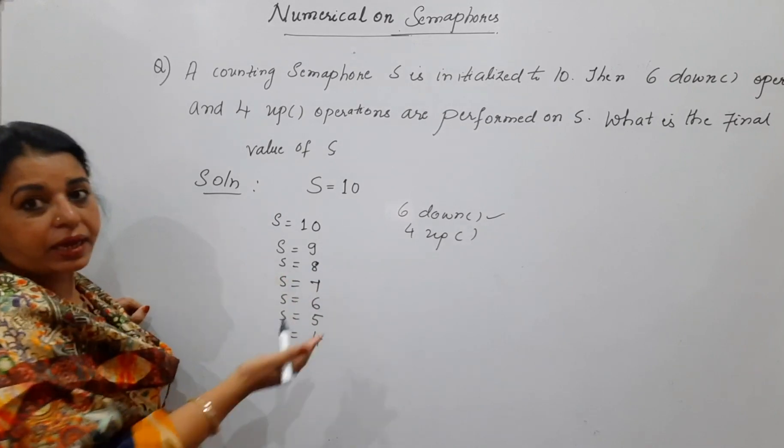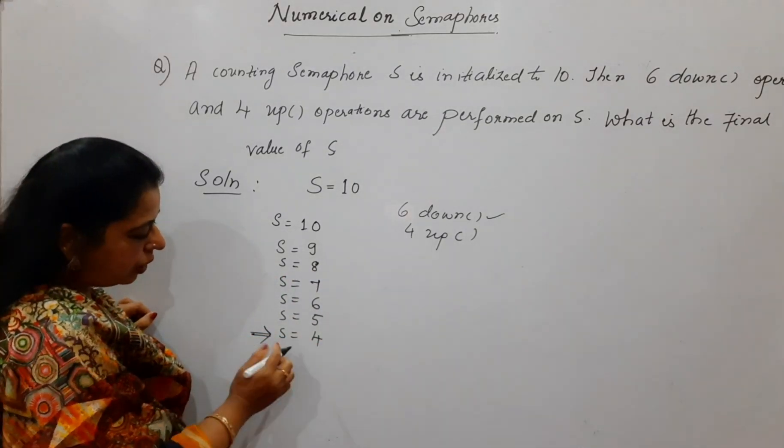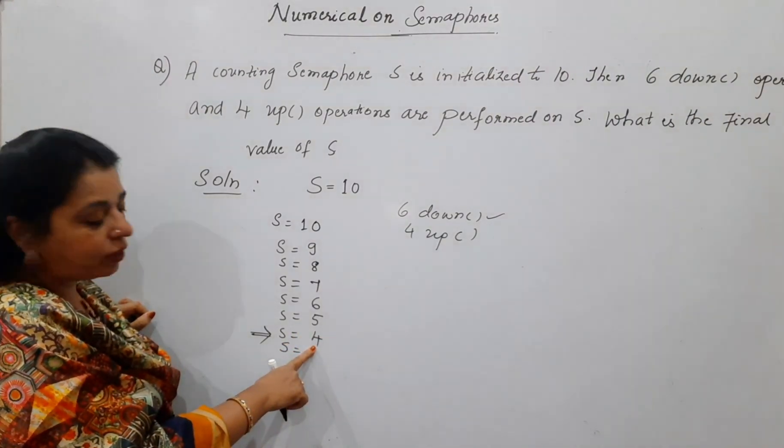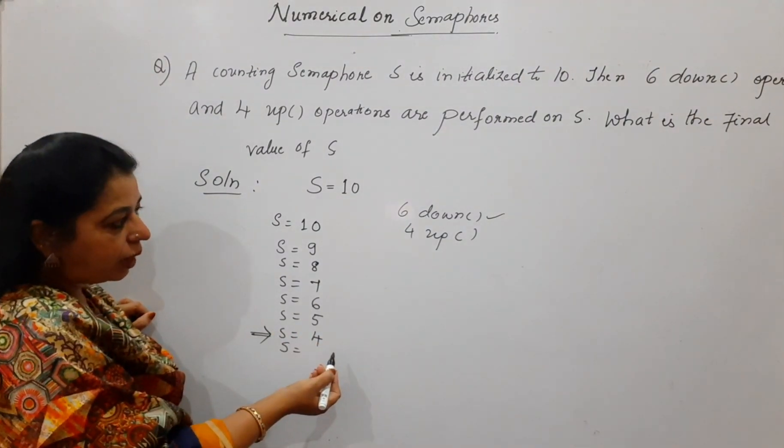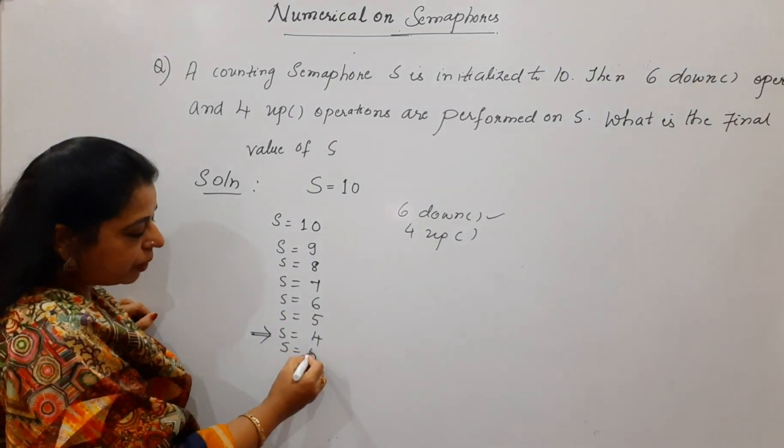Up operation is what? Incrementing the semaphore by 1. So, now you have arrived here for the down. Start doing the up operation for the existing value only. What is the existing value? 4. When you carry out the up operation on semaphore, you are incrementing the semaphore value by 1. So, S becomes 5.